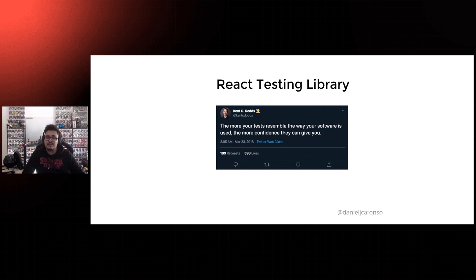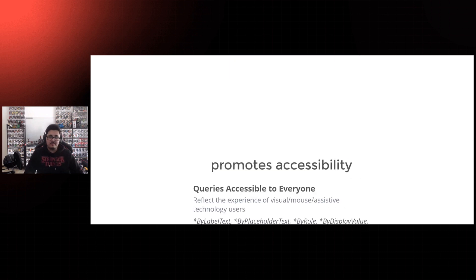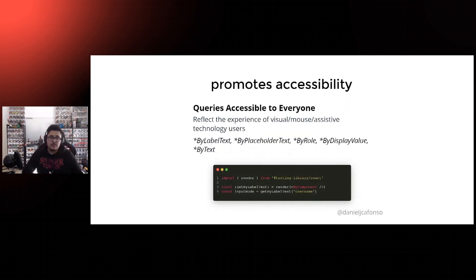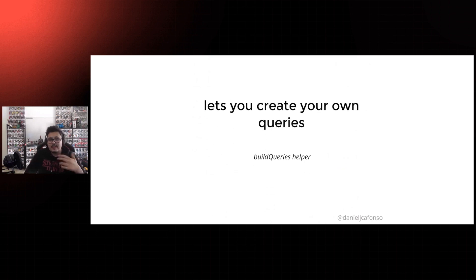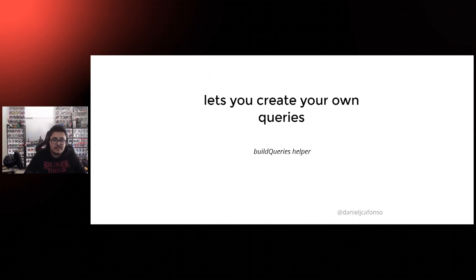Because of that we stopped using Enzyme and migrated to React Testing Library, which is pretty much standard nowadays. With React Testing Library comes its main guideline: 'The more your tests resemble the way your software is used, the more confidence they can give you' — a tweet by Kent C. Dodds, who is actually the creator of Testing Library and React Testing Library. What are the great things about Testing Library? First, it promotes accessibility by giving you queries that reflect the experience of visual, mouse, or assistive technology users, which is super great because when testing your components you might even find accessibility issues you didn't notice during implementation.